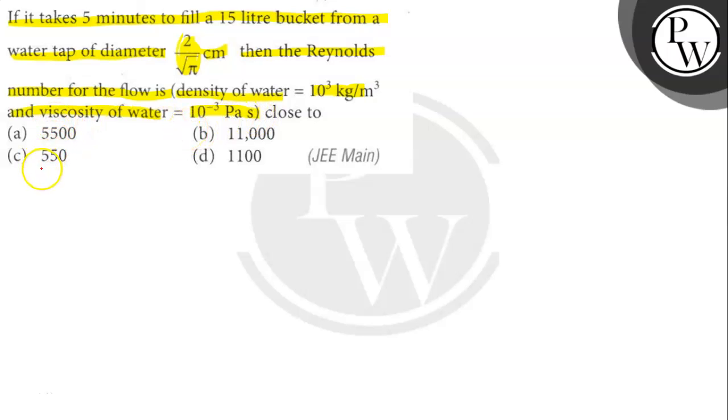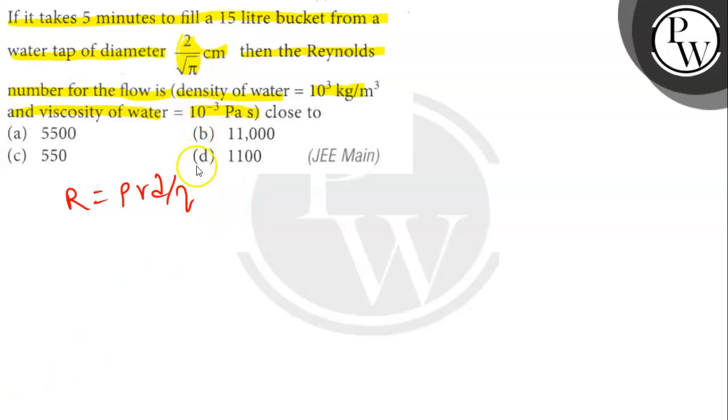Reynolds number is given by R = ρVD/η, where the volume of the water flowing out per second is needed.